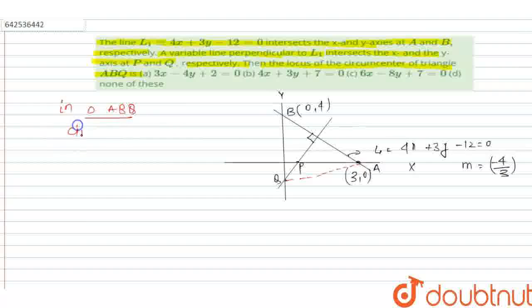Circumcenter is lie on perpendicular bisector, perpendicular bisector of the line AB or L1. Then midpoint of the point A, B. Then midpoint, let's assume this one is the point C.